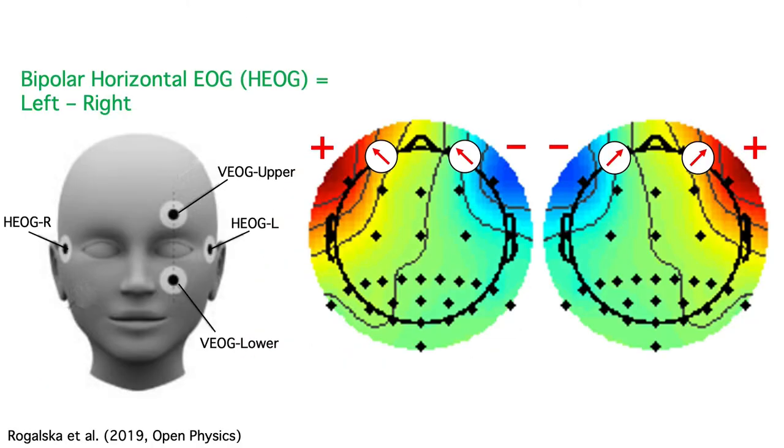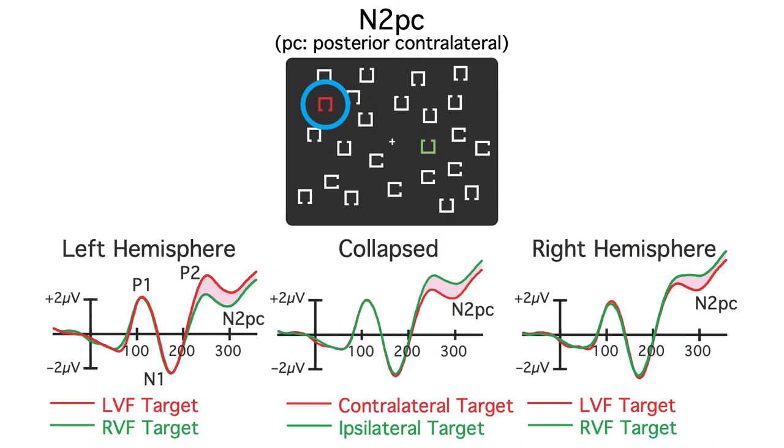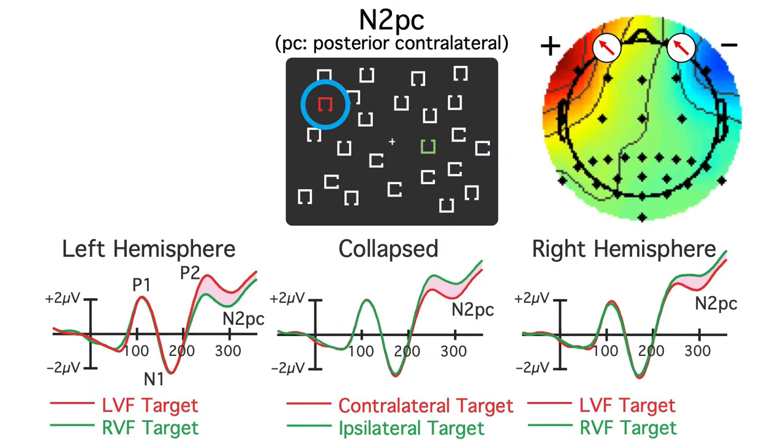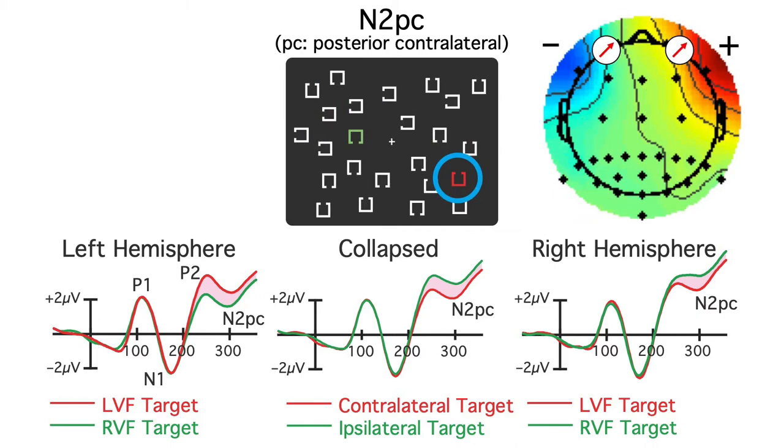Horizontal eye movements can produce major confounds in N2PC experiments. If the subject makes an eye movement toward a target on the left, the EEG will be negative over the right hemisphere, which is contralateral to the target. And if the target is on the right and the eyes rotate rightward, the EOG will be negative over the left hemisphere, which is again contralateral to the target. So moving the eyes toward the target produces a contralateral negativity, just like the N2PC. We have to be really careful to rule out these kinds of artifacts in studies looking at lateralized components like the N2PC, contralateral delay activity, and the lateralized readiness potential.